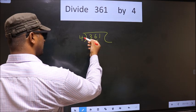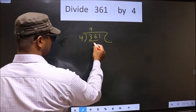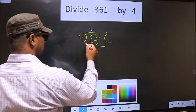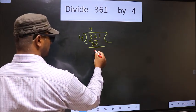When do we get 36 in 4 table? 4 nines, 36. Now, you subtract. 36 minus 36 is 0.